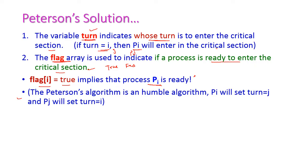The Peterson algorithm is a humble algorithm — that is, pi will set turn equal to j, and pj will set turn equal to i. That is, pi allows process pj to enter the critical section, and process pj allows pi to enter the critical section.